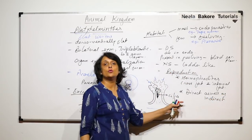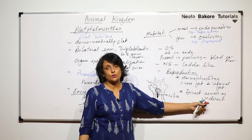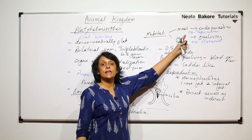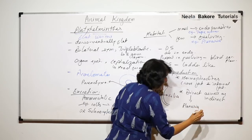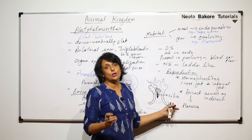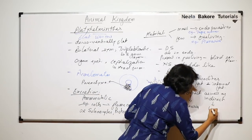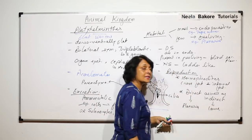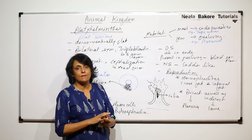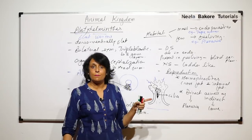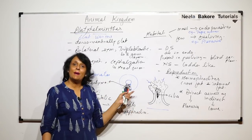Development may be direct or indirect. Direct means there is no larval stage formed, and indirect means there is a larval stage. For example, in planaria there is no larval stage so it has direct development, whereas in tapeworm there are larvae known as hexacanth larvae or cysticercus larvae.